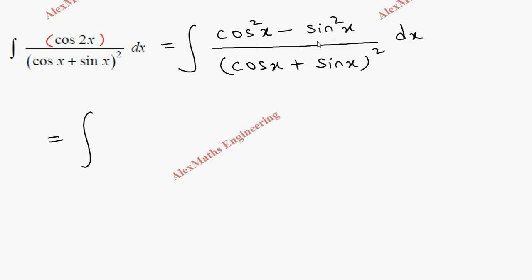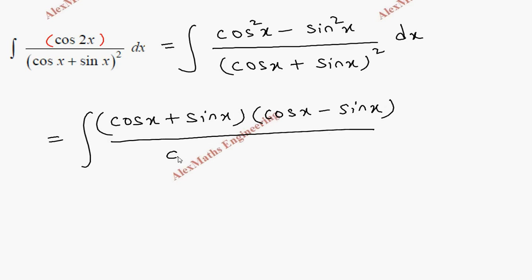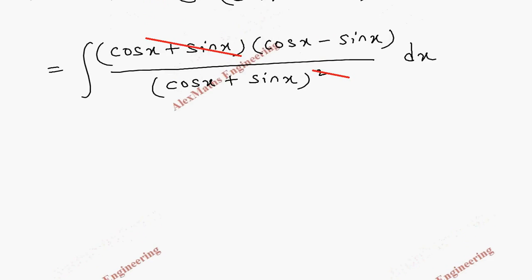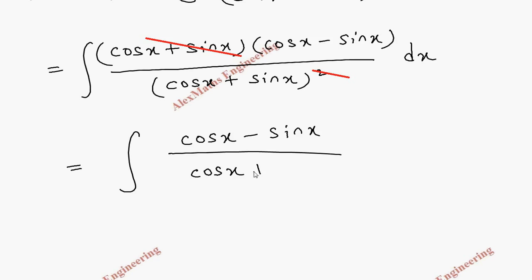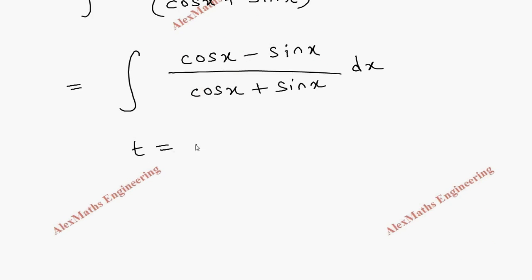That is (cos x + sin x)(cos x − sin x), divided by the denominator (cos x + sin x)² as it is. We can cancel this entire (cos x + sin x) term with one factor from the square in the denominator.